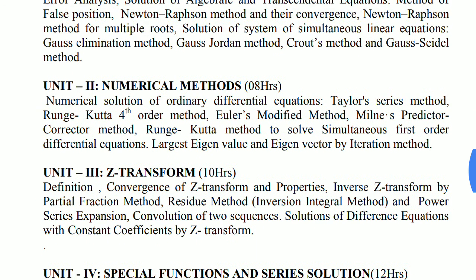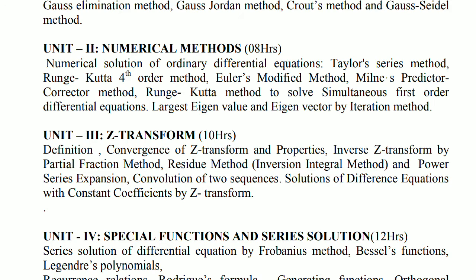Then, unit number 2, you have to do two methods: Euler's modified method and Runge-Kutta method of fourth order. And also do one more topic, that is finding the largest eigenvalue and eigenvector by iteration method. This is a very simple topic. So if you do these three topics, there is a possibility that you may get a question of 14 marks or maybe a question of 7 marks very easily.